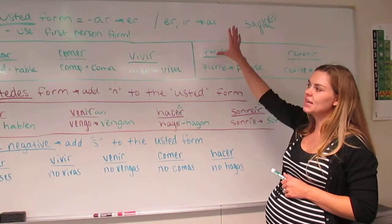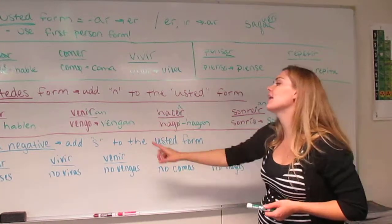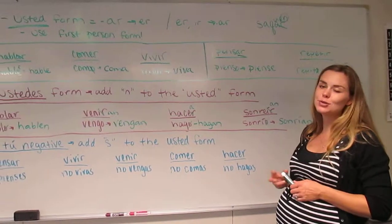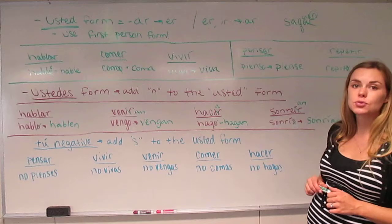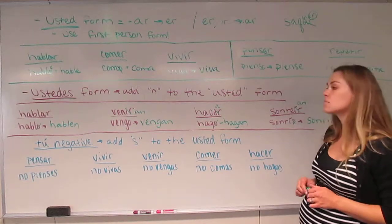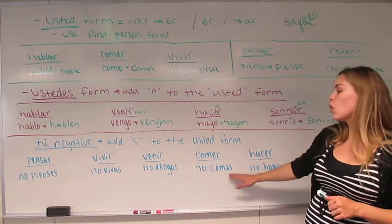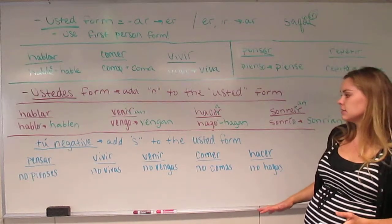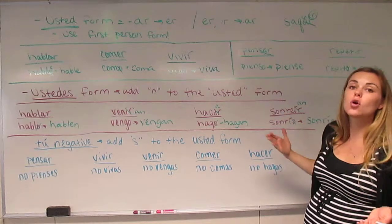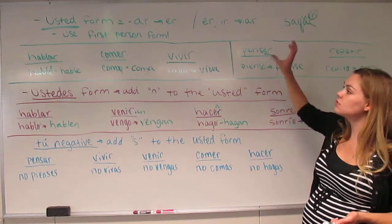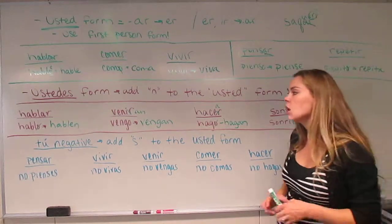The tú negative will follow the same suit as the usted and ustedes form. The tú negative, instead of adding an N to the usted form, you add an S to the usted form. Now remember that a tú negative statement means don't do something. And it's only used for the tú form. So if you're talking to your classmate and you say eat, you would say come. But if you say don't eat, don't eat that, you would say no comas. No comas eso. Don't eat that. If you were talking to an adult though, and you said eat, you would say coma and no coma. They don't change. There's no change in the ustedes form, no change in the usted form. Only tú has an affirmative and negative command form.